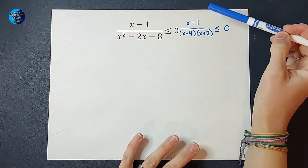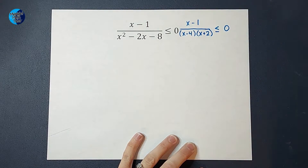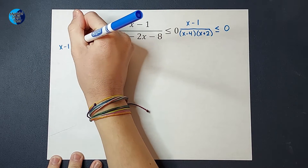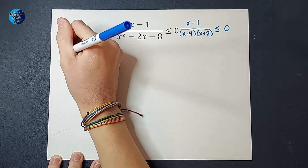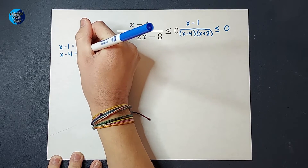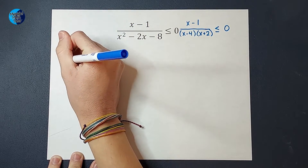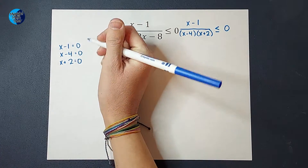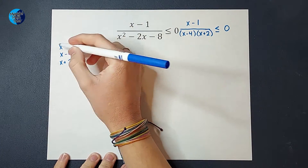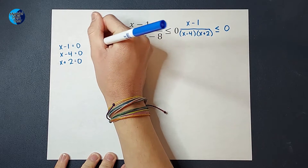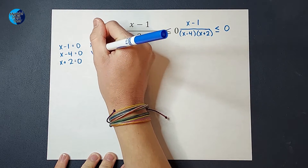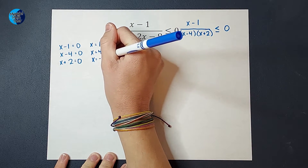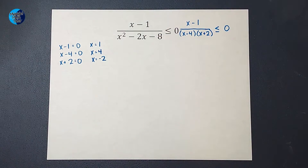Now that it's factored, I'm going to set each of these equal to zero. So I'll have x minus 1 equals zero, x minus 4 equals zero, and x plus 2 equals zero. Then I'm going to solve each for x. Adding 1 to both sides gives x equals 1. Adding 4 gives x equals 4. And subtracting 2 gives x equals negative 2.